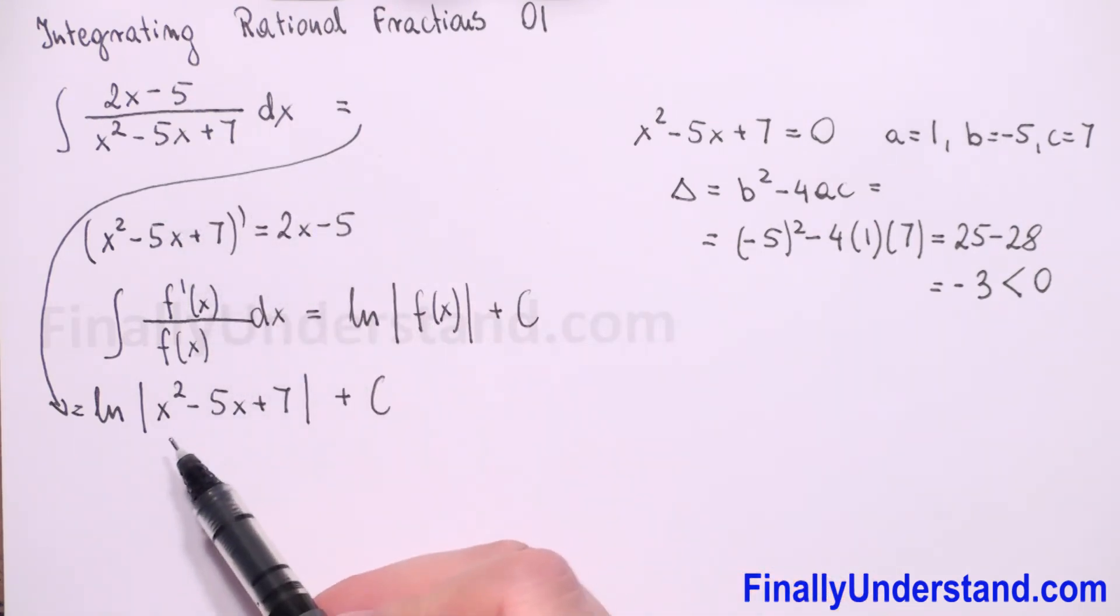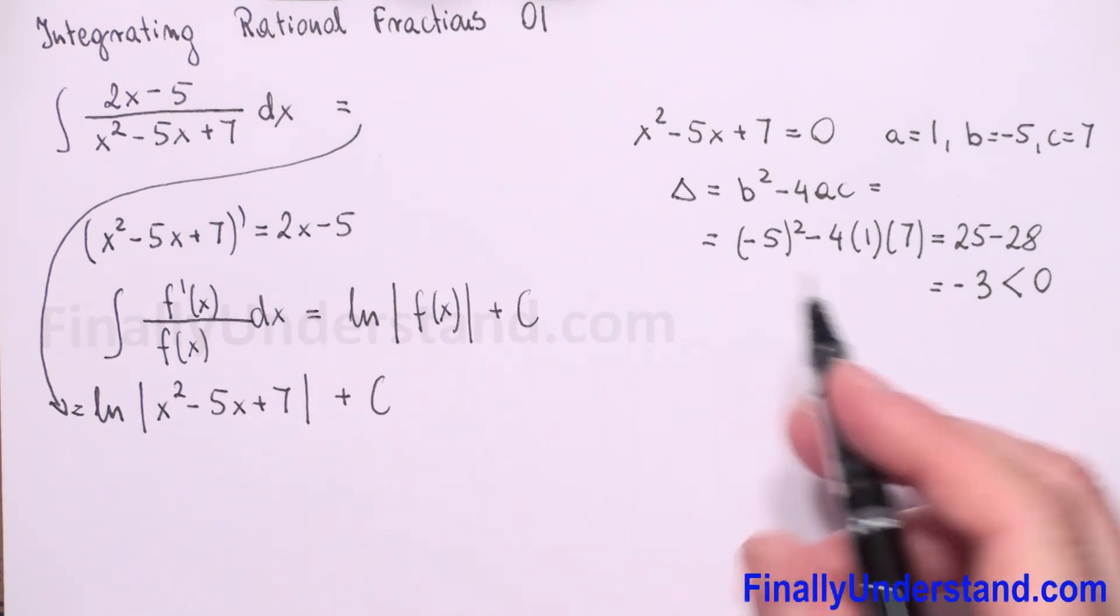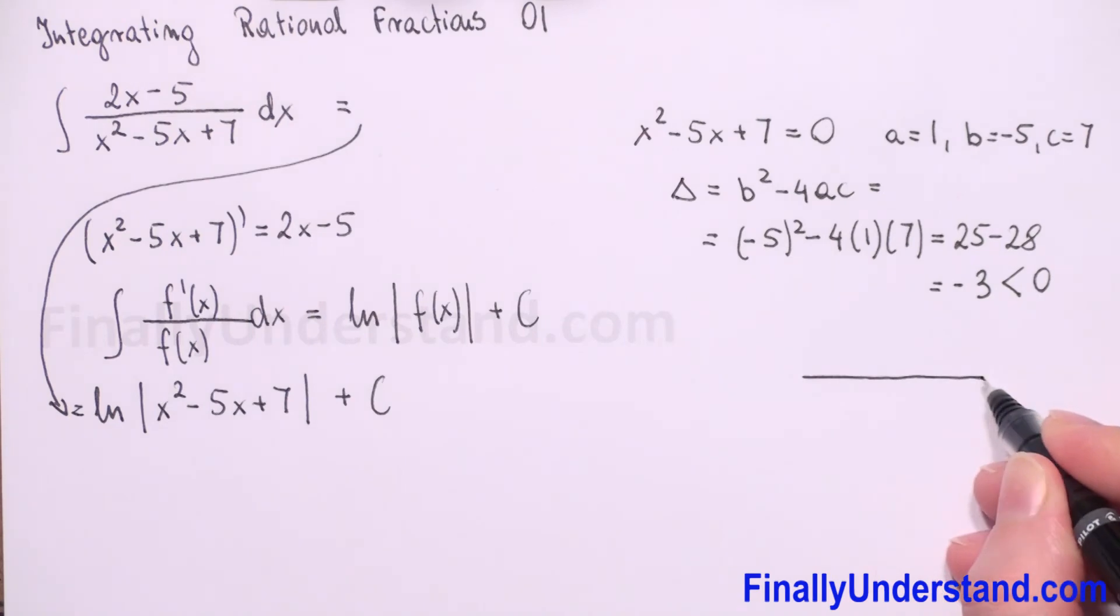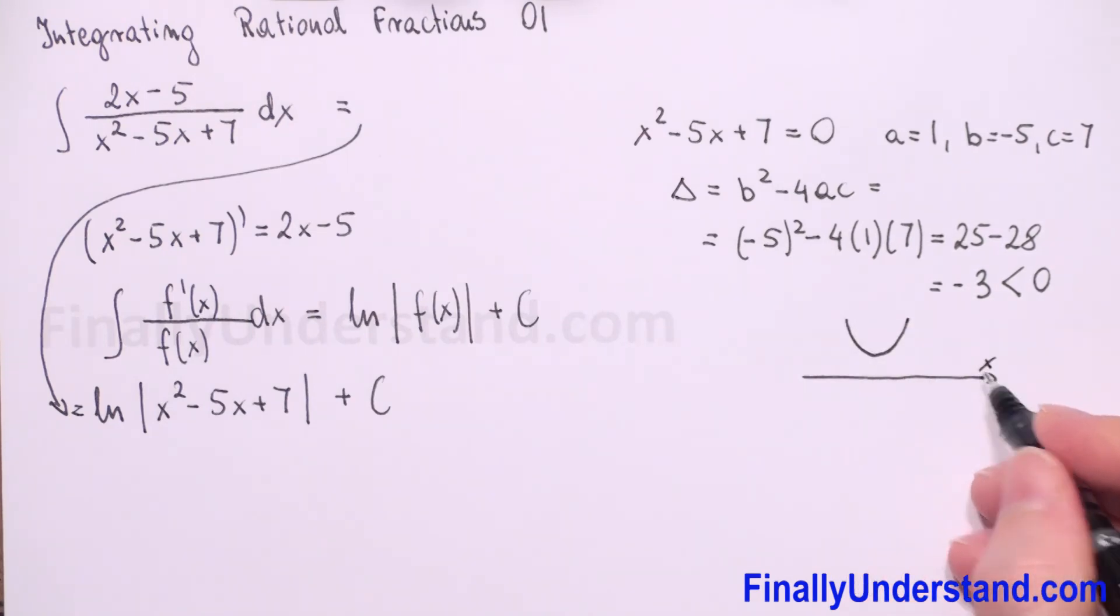And because coefficient before x square is positive, so the graph, because this is quadratic function, the graph is parabola, open up, is above x axis.